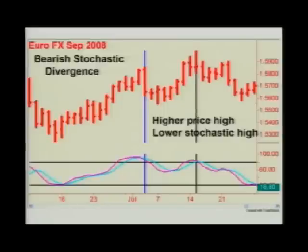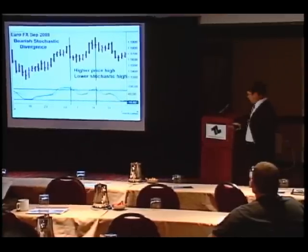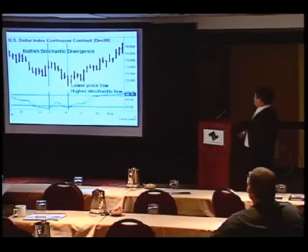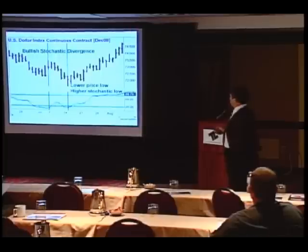Here we have standard divergence — a swing high, a stochastic high, a higher high with a higher closing high. I'm particularly concerned with the closing high. And a lower stochastic high. So we have a standard stochastic divergence setup. And here we have the standard bullish stochastic divergence setup: a swing low and a stochastic low, a lower price low, and a higher stochastic low.